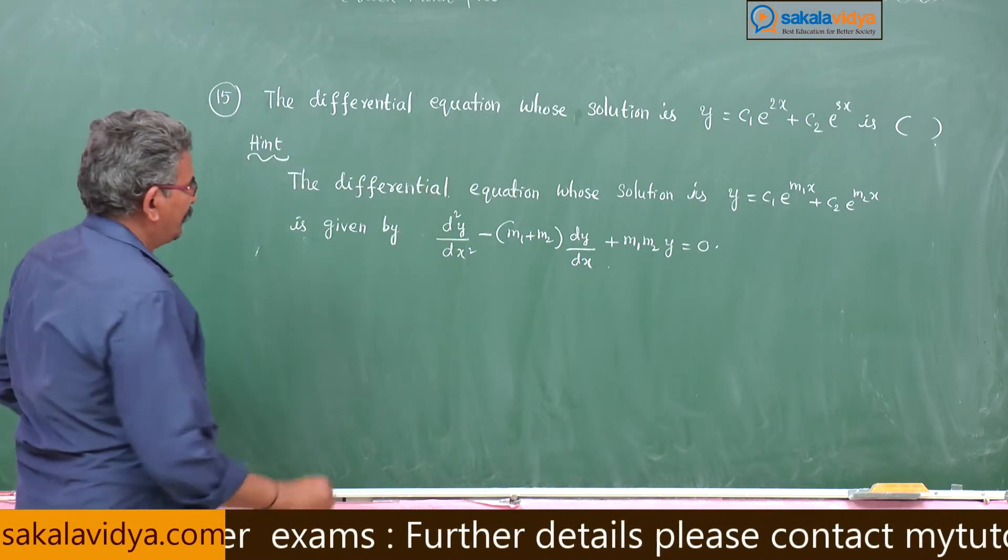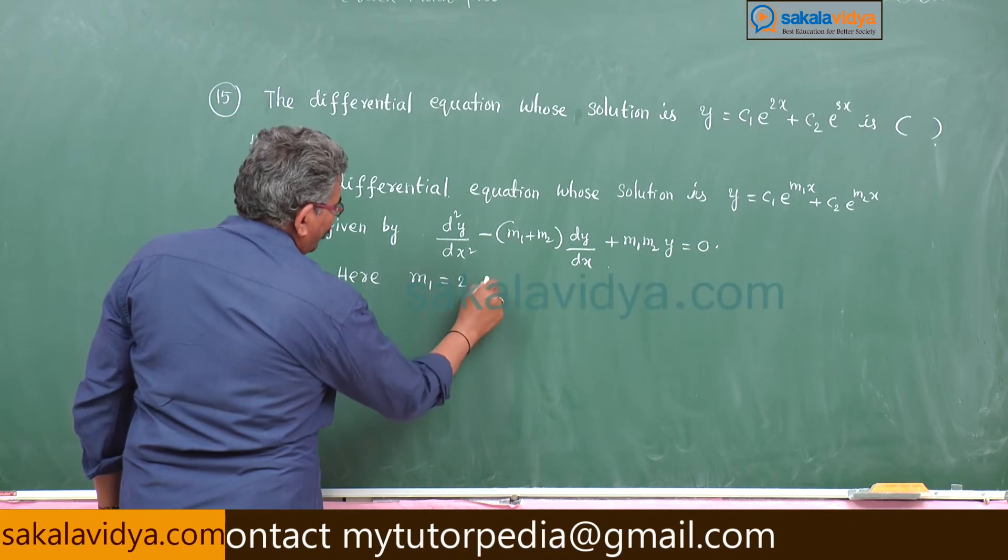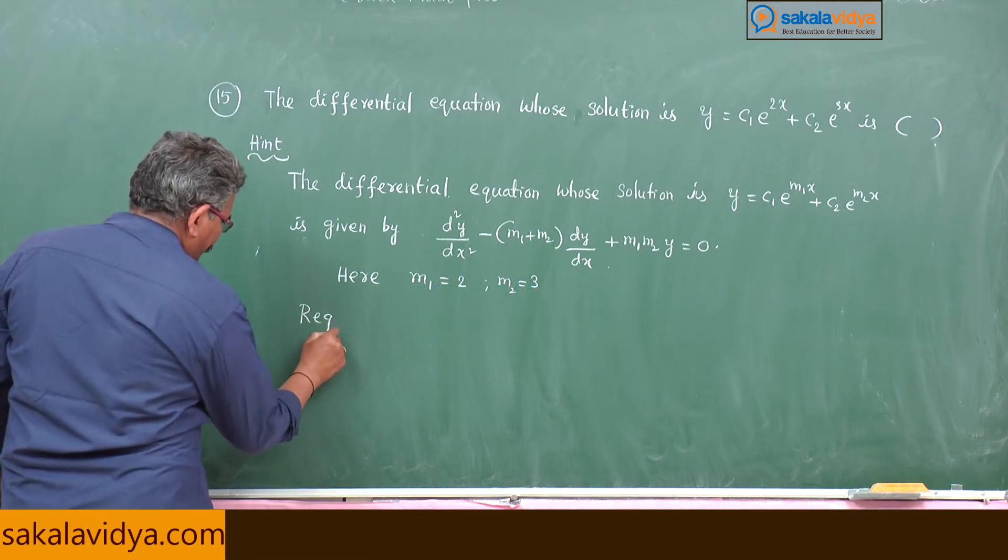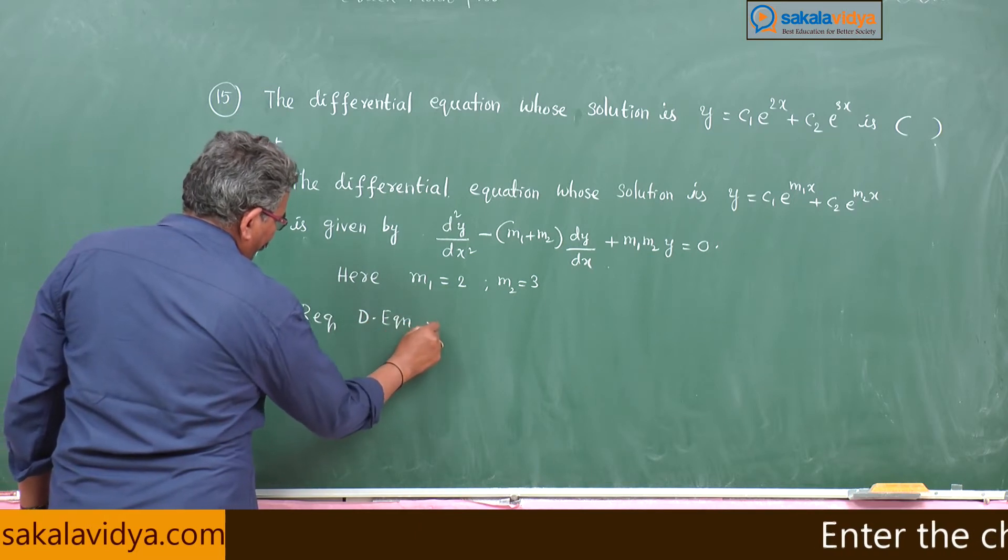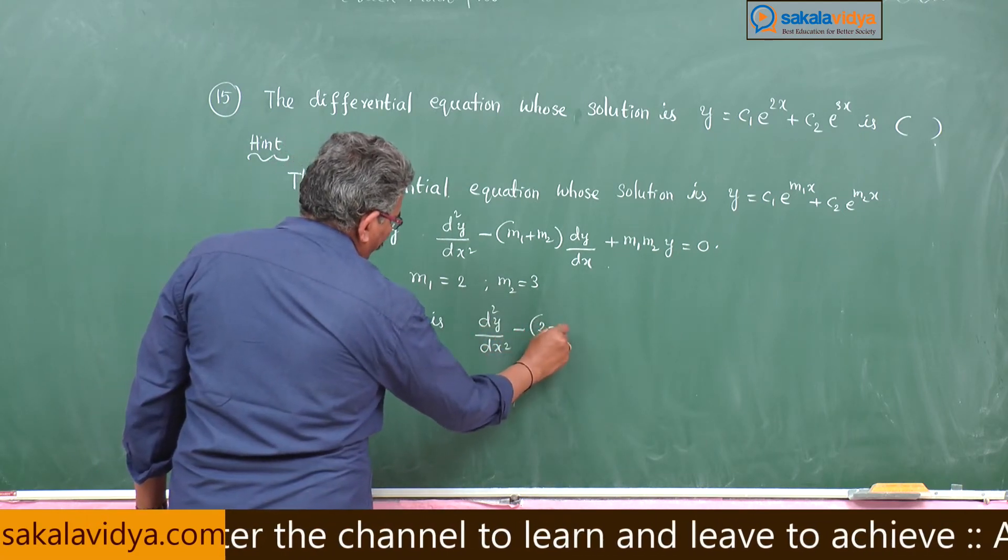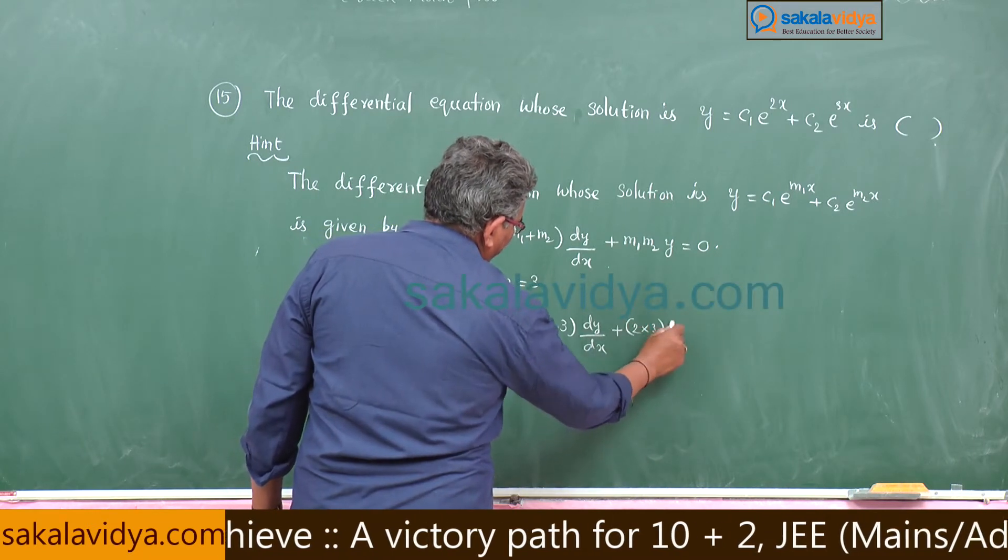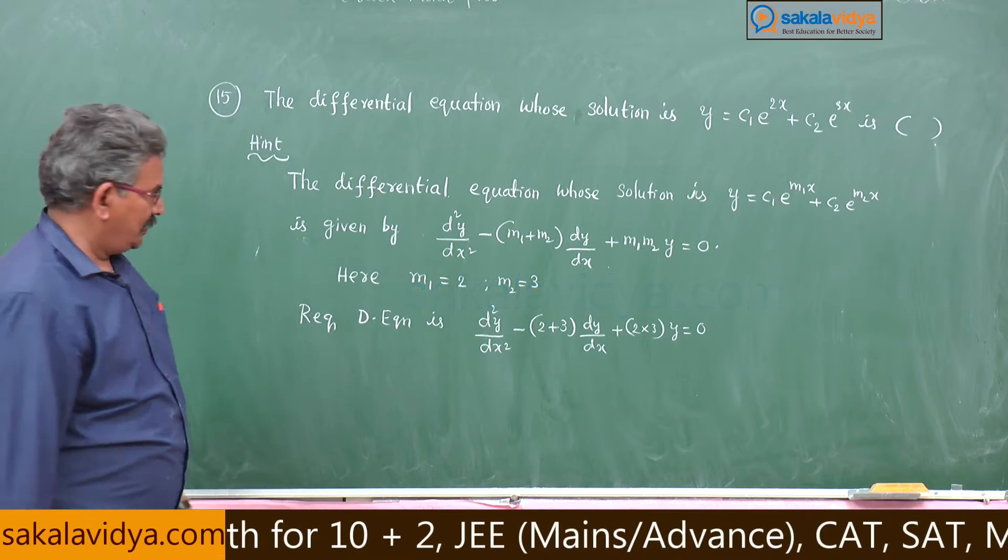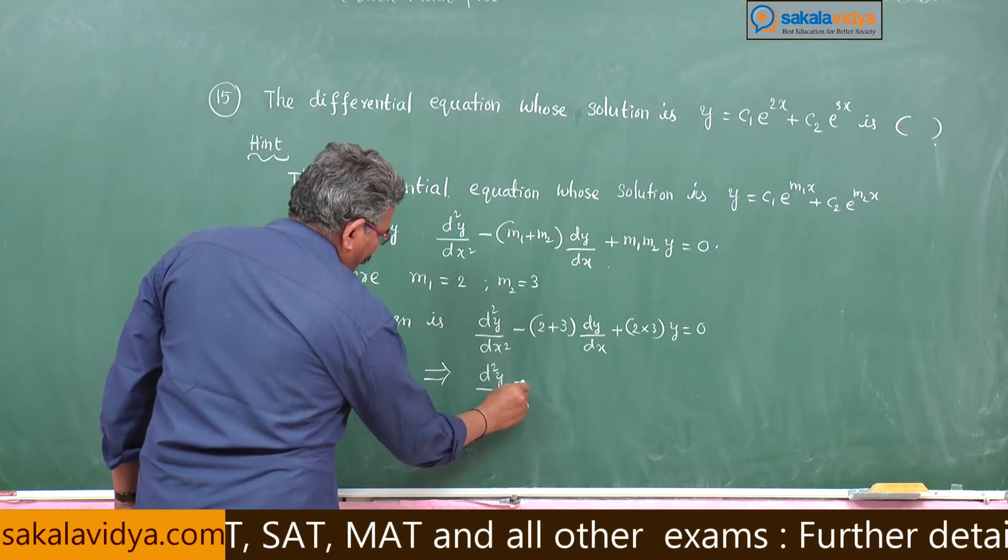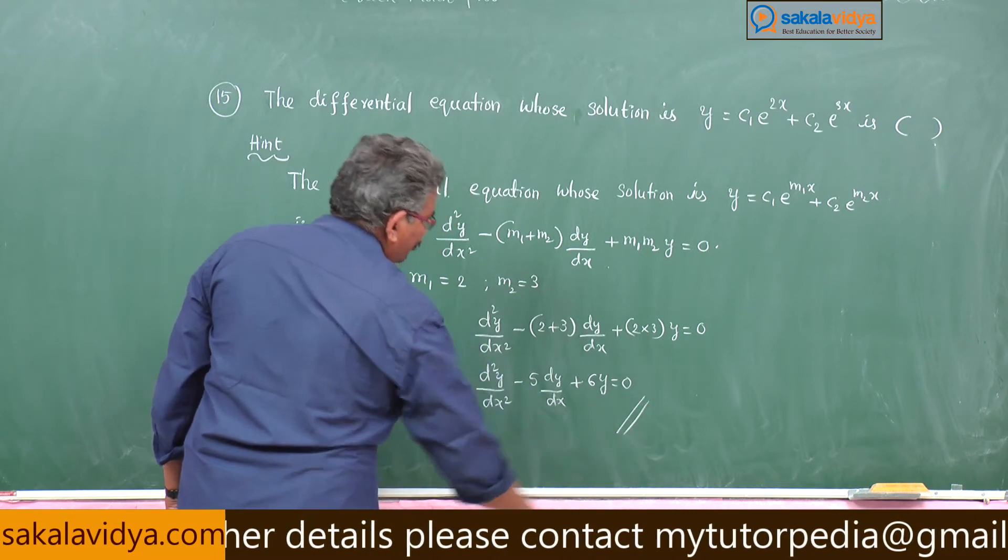Just compare with that one. Here m1 equals 2, m2 equals 3. The required differential equation is d²y/dx² minus 5·dy/dx plus 6y equals 0. This is the answer.